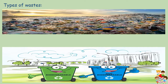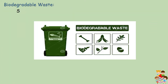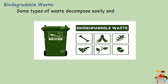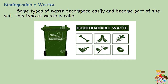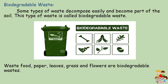Types of Wastes. Waste is of two types: Number 1 is biodegradable, and Number 2 is non-biodegradable. Biodegradable waste: Some types of waste decompose easily and become part of the soil. This type of waste is called biodegradable waste. Waste food, paper, leaves, grass and flowers are biodegradable waste.